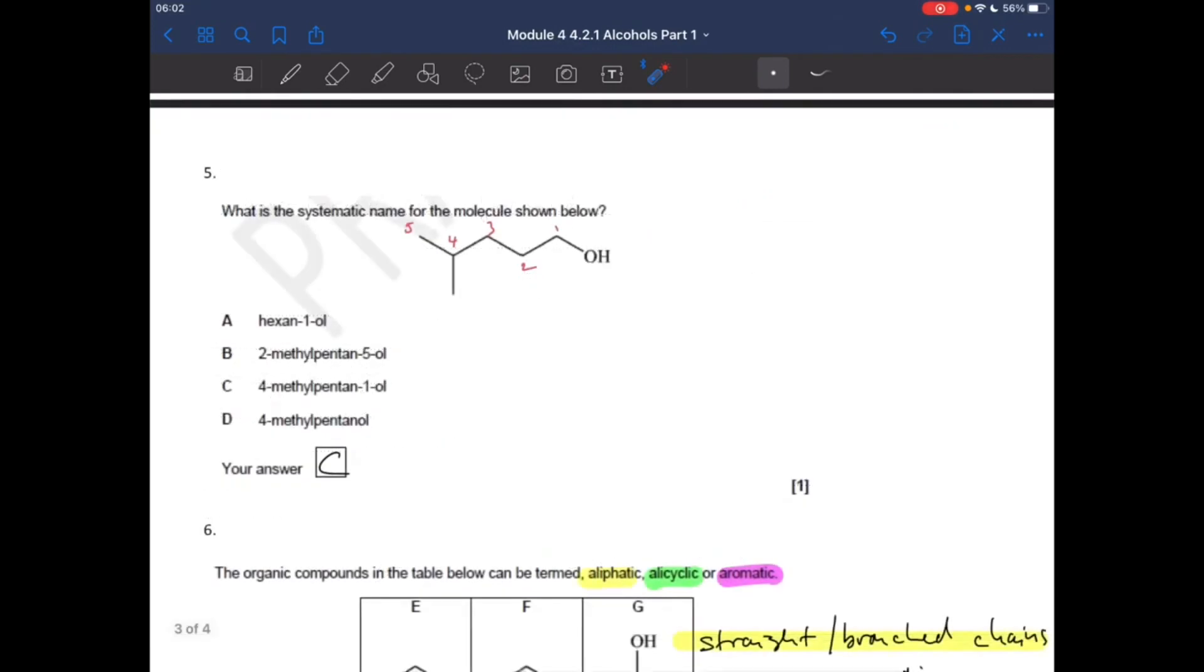Number 5, systematic name for the molecule shown. So we've got 1, 2, 3, 4, 5 carbons in the main chain. OH is on carbon 1. Methyl on number 4. So 4-methylpentan-1-ol.